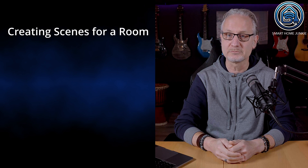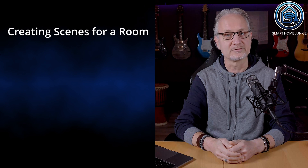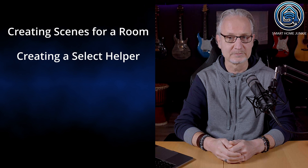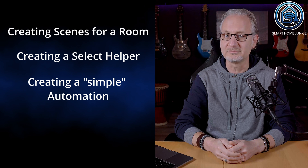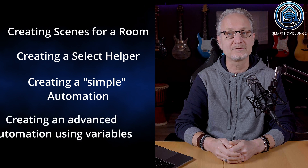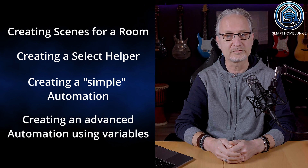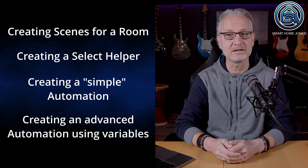The steps that we are going to take in this Home Assistant tutorial are as follows: 1. Creating scenes for a room. 2. Creating a Select Helper. 3. Creating an automation to switch between scenes. 4. Creating an advanced automation that switches between scenes and makes it also possible to create a scene selector on your dashboard.